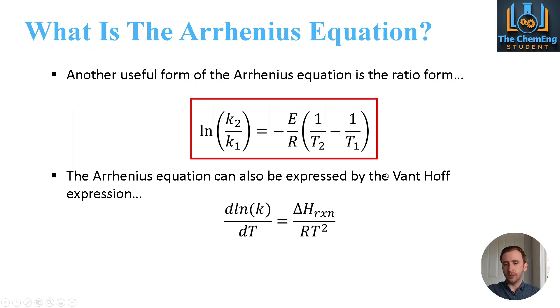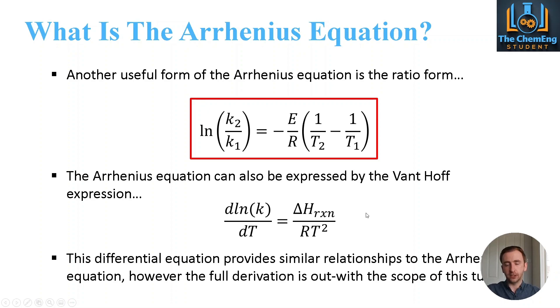And just as a side note, because some universities like to go into the proofs and like to give you some further background, the Arrhenius equation can also be expressed using what was called the Van't Hoff expression. And that's this equation here. Now this is indeed outwith the scope of this particular tutorial, but it provides us with information relative to the enthalpy of the reaction with respect to the rate constant, still a function of temperature. But the full derivation we won't do that here. But just so that you're made aware that these are interchangeable and can be expressed in a similar format.